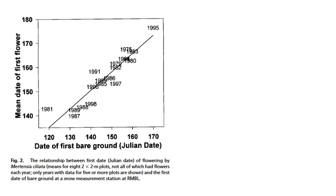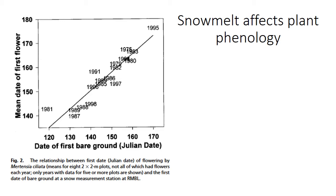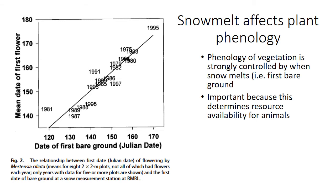A common phenological event in a plant's life is flowering time. You would think that if it's getting warmer, plants should be flowering sooner. However, April minimum temperature was not a strong predictor of plant phenology. Instead, the date of first bare ground was a strong predictor, indicating that plant phenology is strongly controlled by the timing of snow melt. The fact that plants are responding to a different cue than animals like marmots signals a potential problem.